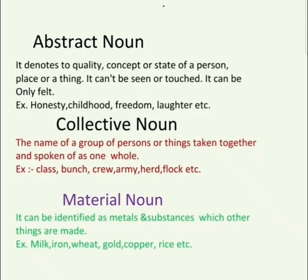Abstract noun: it denotes a quality, concept, or state of a person, place, or thing. It cannot be seen or touched. It can only be felt. Words like honesty, childhood, freedom, and laughter cannot be seen or touched.